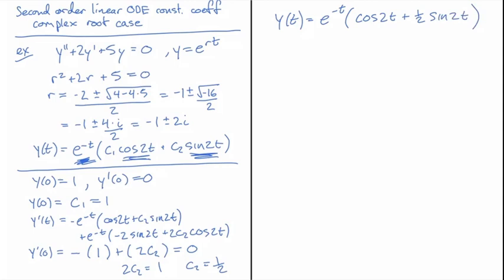Okay, so that's a straightforward case of a complex root to the characteristic equation with an initial condition.